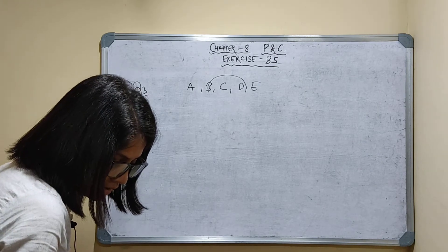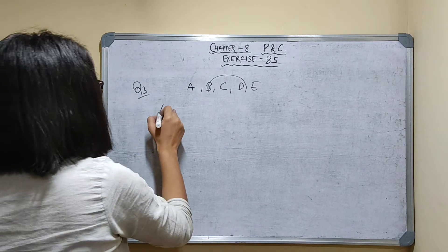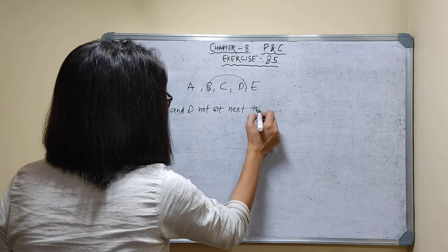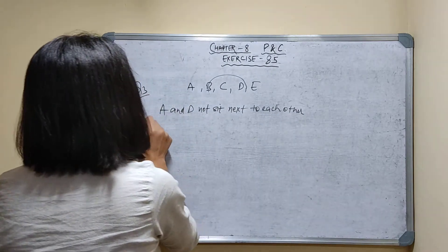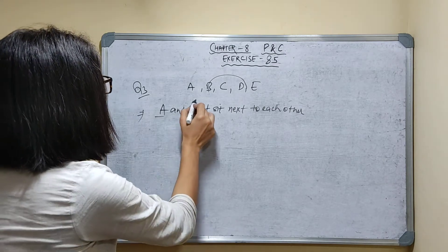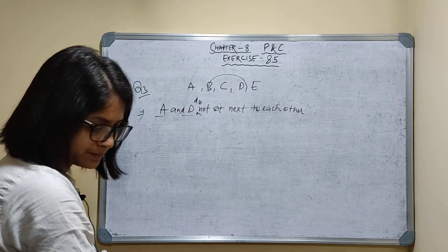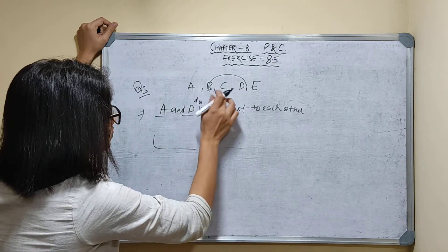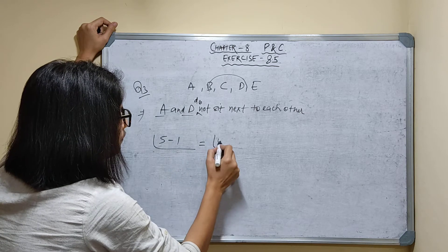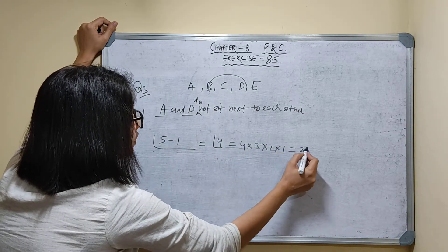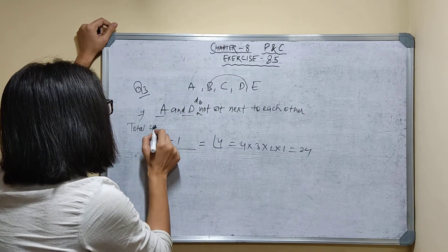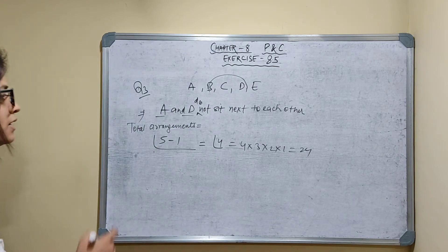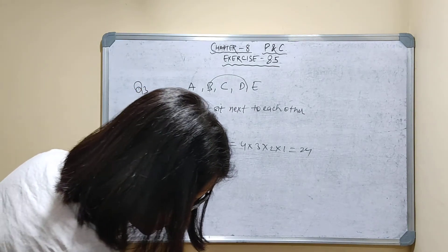Part 2: A and D do not sit next to each other. First, find the total arrangements you can make with these 5 persons around a round table. It will be factorial of 5 minus 1, that is factorial of 4 — which is 4×3×2×1 = 24. So, 24 total arrangements around the circular table.